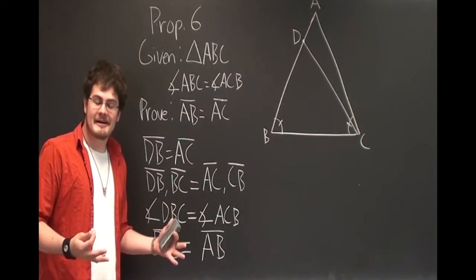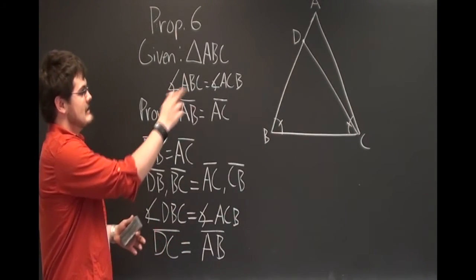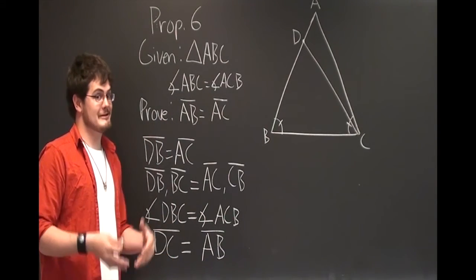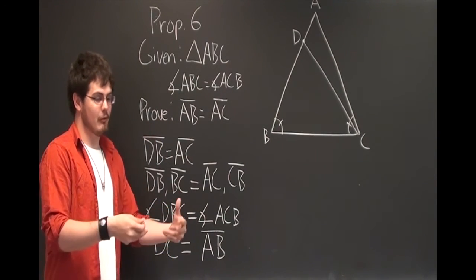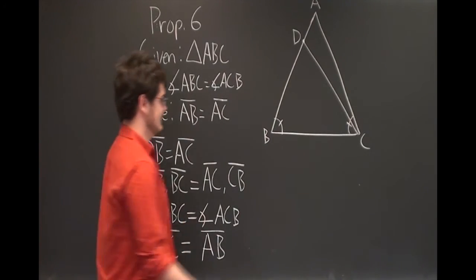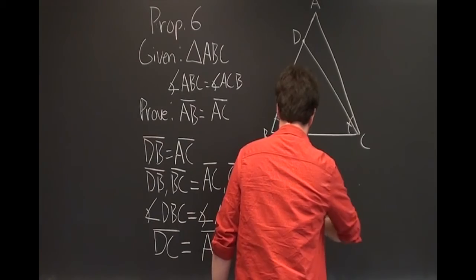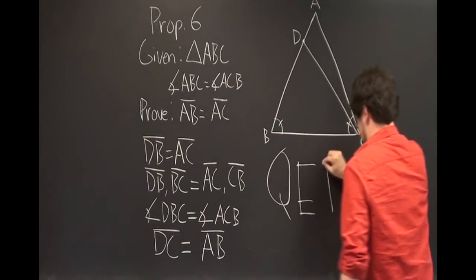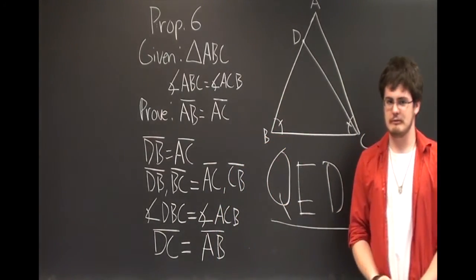So what does that tell us? That tells us that AB and AC are in fact not not equal. They are equal, which is what we were trying to prove. QED. Thank you.